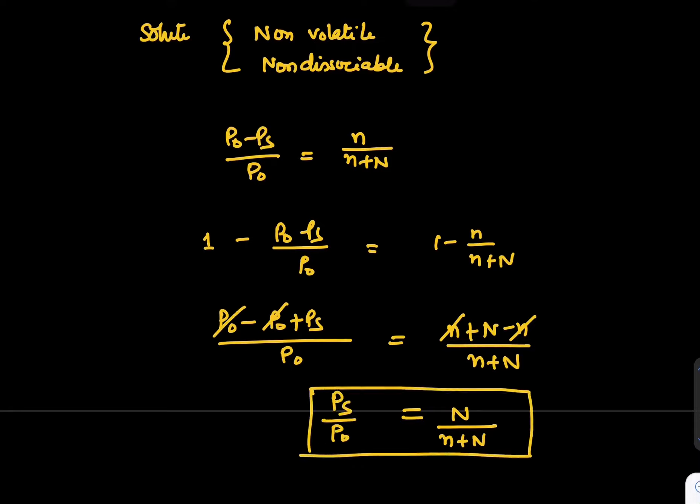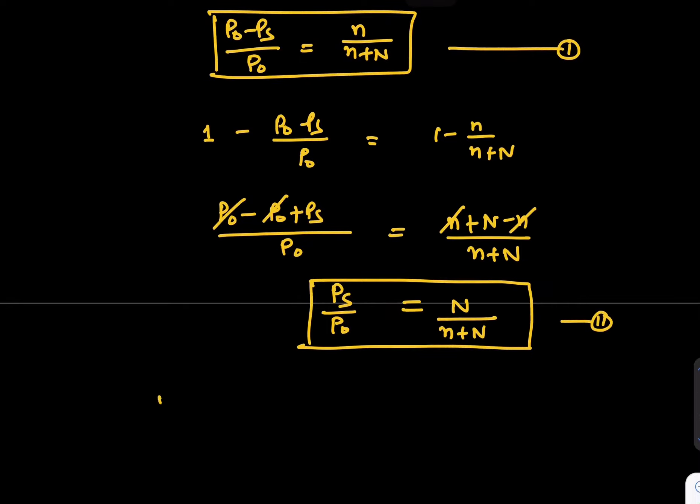These kind of relations we can get and we can solve these relations at any point of time. Take these two things, equation number 1, equation number 2, divide 1 by 2. It will give you P naught minus PS upon PS equals n upon N.